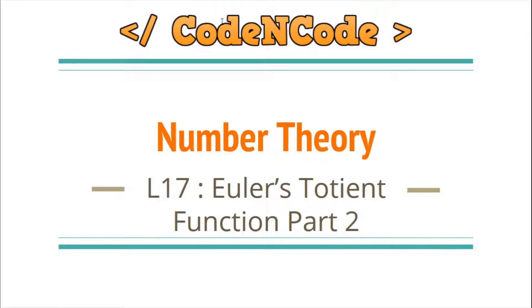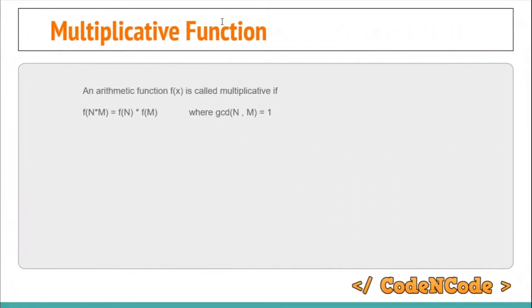Hello guys, this is CodeEncode and this is the 17th lecture of this number theory series, and this is part 2 of Euler's Totient Function. In part 1, we have already seen the introduction of Euler's Totient Function — its definition, and how we can calculate it, how we can evaluate any prime or any prime power on Euler's Totient Function. In this lecture, we are going to generalize the idea and derive a general formula that we can apply on any number, not only primes and powers of primes.